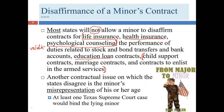Texas takes a somewhat different approach. While clarity is limited because this issue rarely arises, Texas courts appear more likely to hold that a lying minor cannot disaffirm, since the minor chose to assume adult responsibilities. At least one Texas Supreme Court case supports this: a lying minor cannot disaffirm.